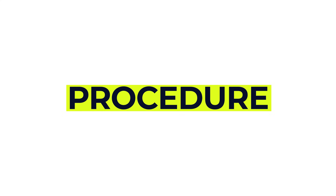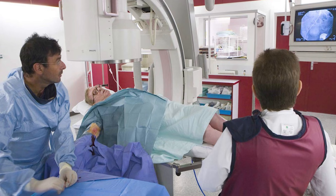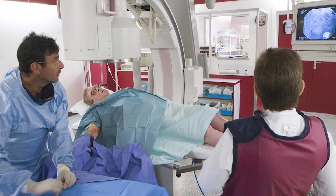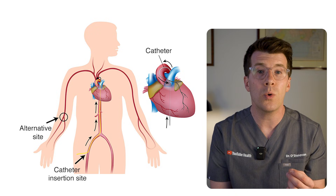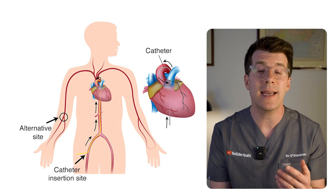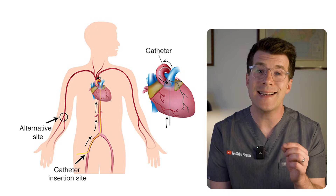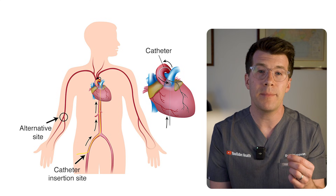On the day of your angiography you'll change into a hospital gown and lie on an x-ray table. You'll stay awake but you might be given medicine to help you relax. A small cut is made, usually in your groin or wrist, and the area is numbed with a local anaesthetic. A long thin tube called a catheter is inserted into one of your arteries and then carefully guided to the area being examined.